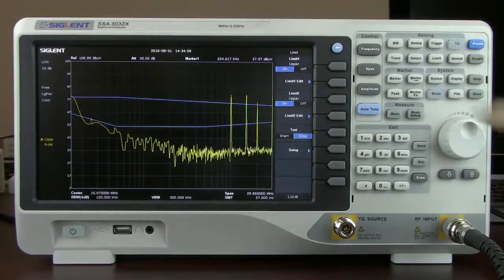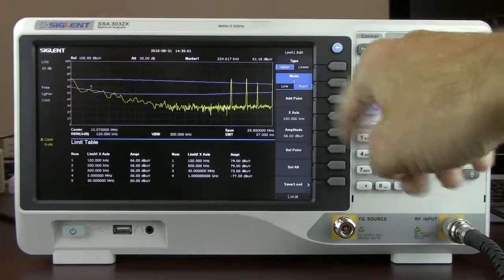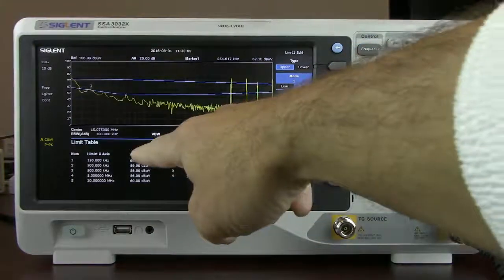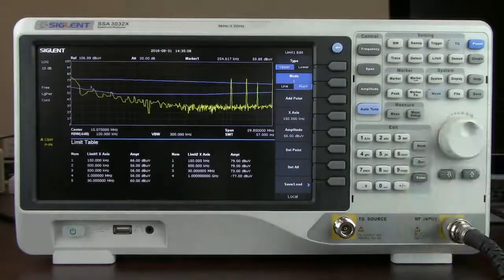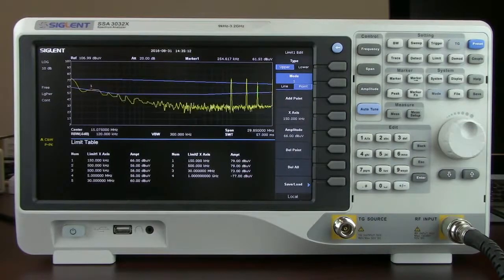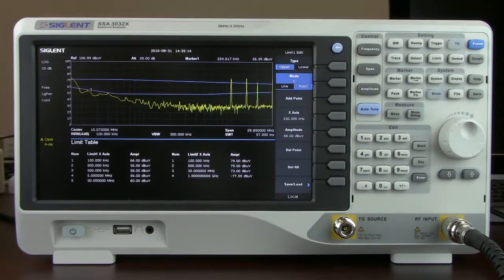Both of the limits can also be edited. They've got a line mode as well as a point mode. In the point mode, you can see we've got the X axis as well as the amplitude values for each of the points in that particular test. All of these features are very helpful when you're performing pre-compliance, and there's also a software application that can help to sequence a lot of the data collection.